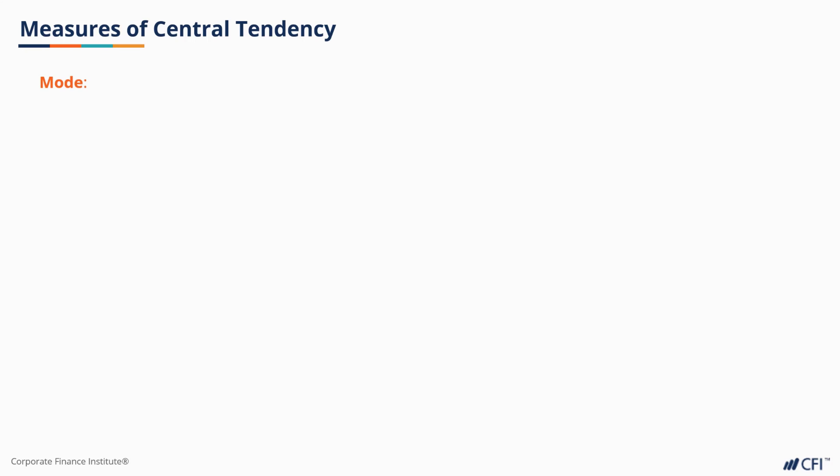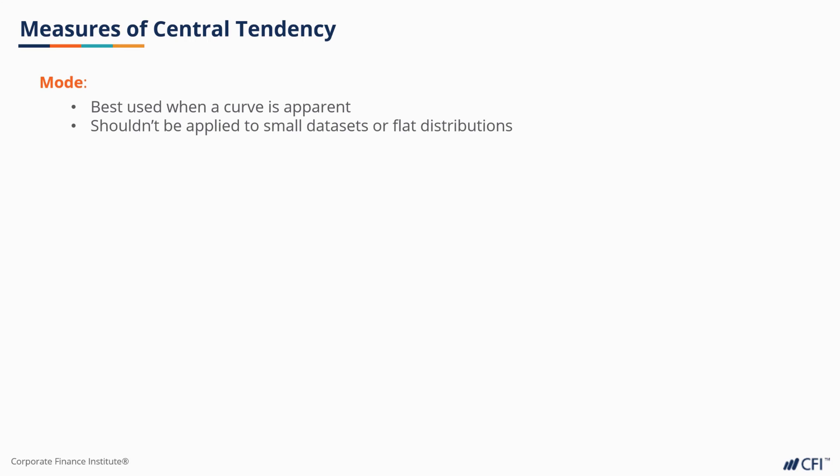Finally, there is the mode. The mode is best applied when our data set is quite large and a curve is apparent. When applied to small data sets or relatively flat curves, it shouldn't be considered as too meaningful. But with a good set of data, the mode describes the most likely outcome — the outcome that occurs the most frequently. A call center trying to figure out the busiest hours of the day, the point when it will perhaps need the most staff, would ideally want to look at the mode.